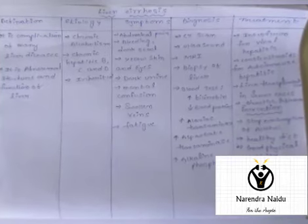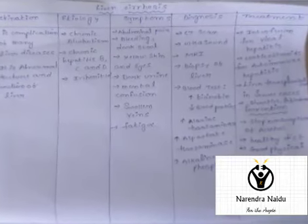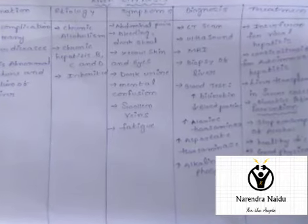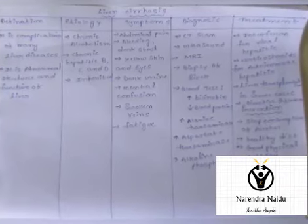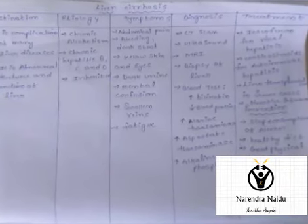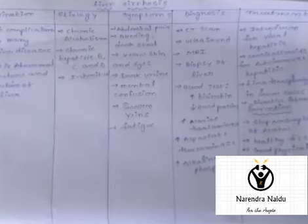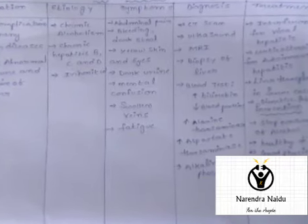The definition: liver cirrhosis is a complication of many liver diseases. It results in abnormal liver structure and function. The liver structure and functions are totally disturbed.